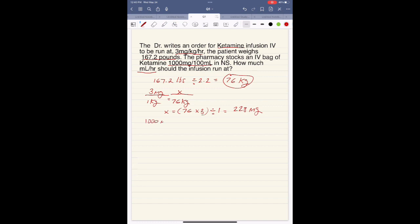The stock solution the pharmacy has of ketamine is 1,000 milligrams per 100 ml equals 228 milligrams over X milliliters. Cross-multiply: X equals 228 milligrams times 100 ml divided by 1,000.